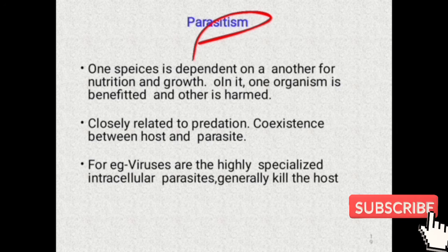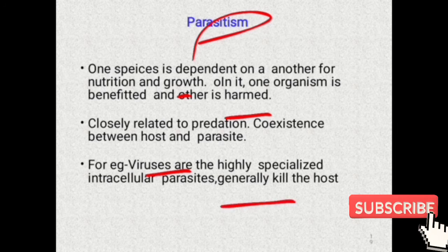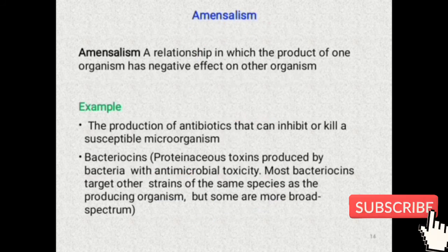The next is parasitism. In parasitism, one species is dependent on another for nutrition and growth, and as a result causes harm to the host. It is closely related to predation. An example is the association of viruses and bacteria — specifically bacteriophage, in which the bacteriophage attacks bacteria and kills them.